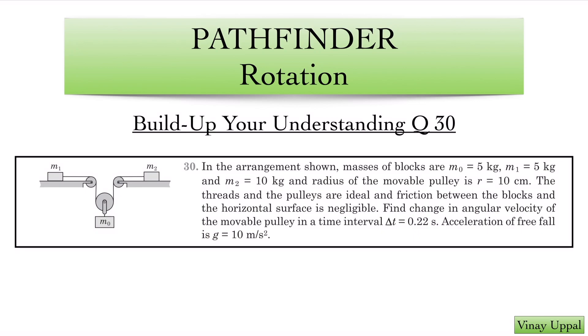Let's take a look at this question where I am going to show you how to do this in the fastest possible manner. In the arrangement shown, masses of the blocks are M0, M1 and M2. These are three blocks that have been given to us and the radius of the movable pulley is 10 centimeters. This is the movable pulley. The threads and the pulleys are ideal and friction between the blocks and the horizontal surface is negligible. The pulleys are all massless.